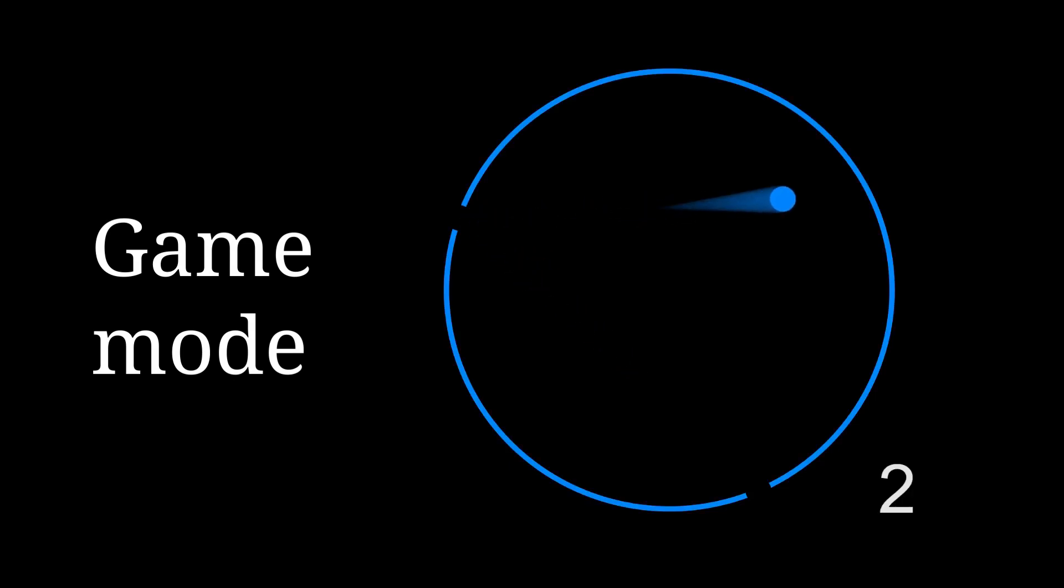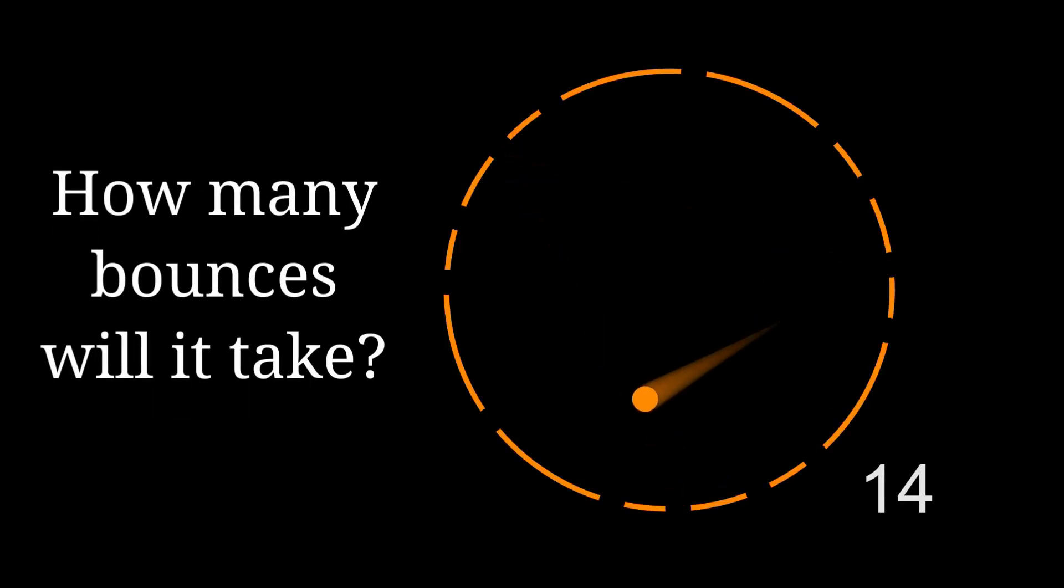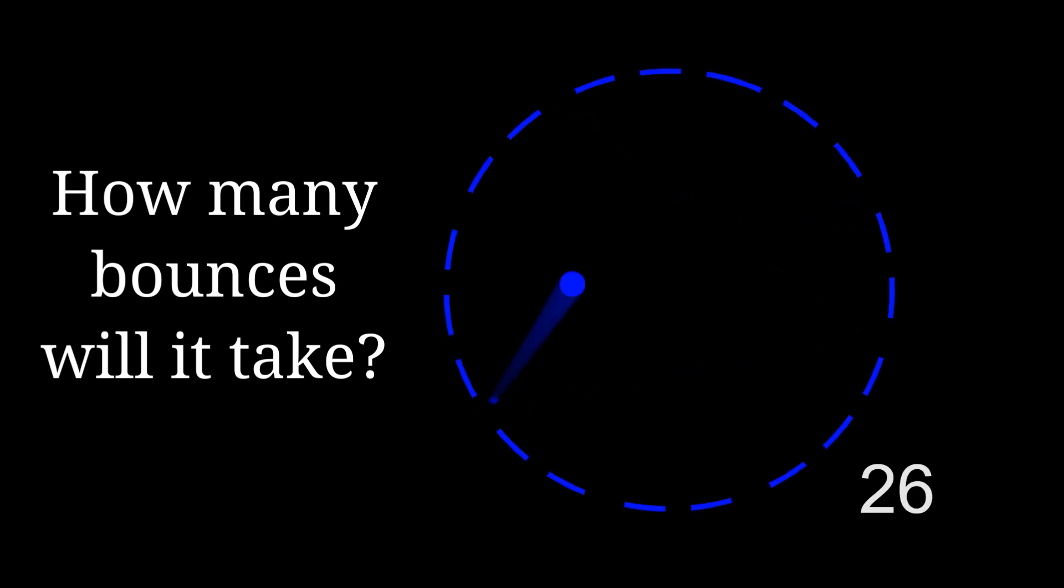Try the game mode. From the position you select, how many bounces will it need to eliminate the whole circle? Can you reduce it next time?